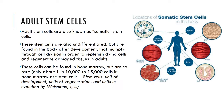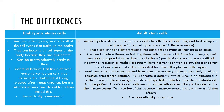Adult stem cells are also known as somatic stem cells. These stem cells are also undifferentiated but are found in the body after development, and multiply through cell division in order to replenish dying cells and regenerate damaged tissues. These cells can be found in bone marrow, but are very rare — only about one in ten thousand to fifteen thousand cells in bone marrow are stem cells.